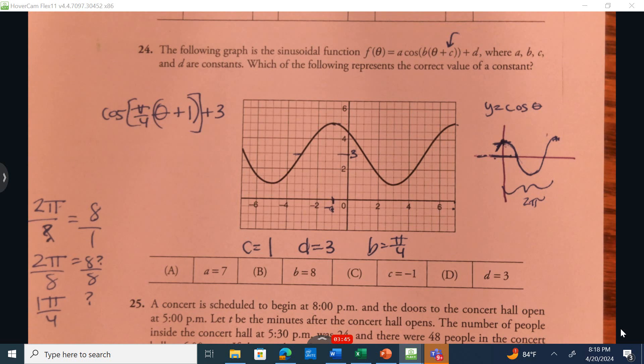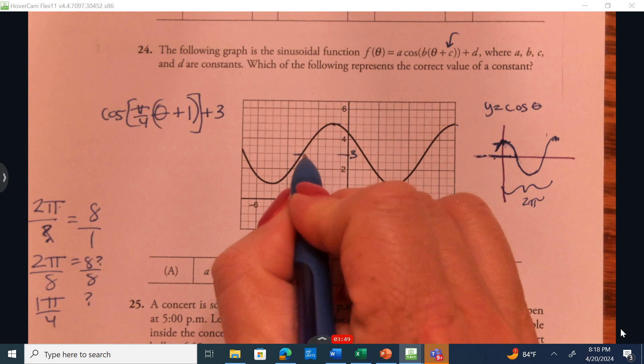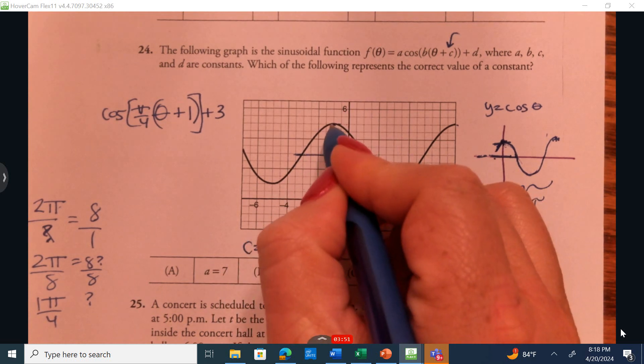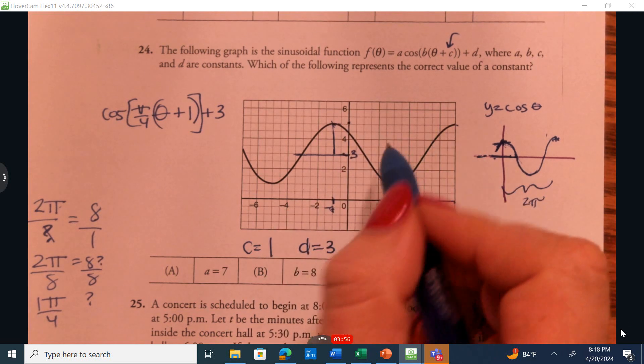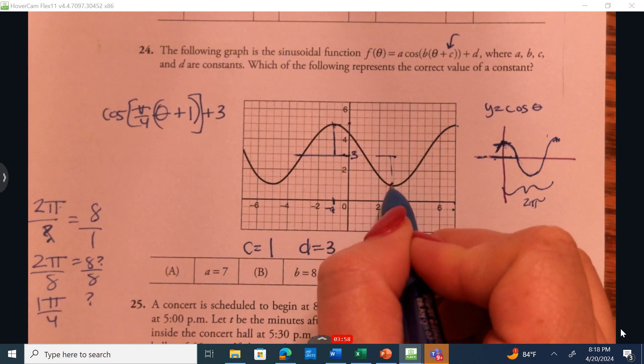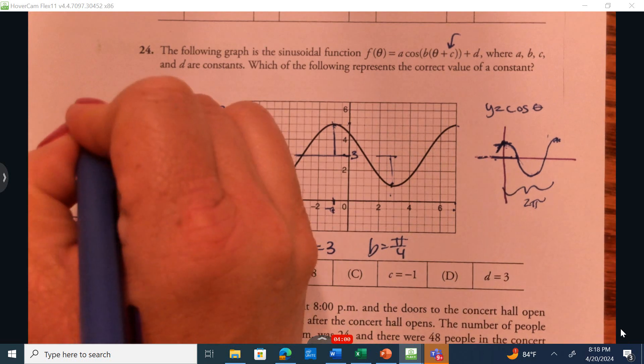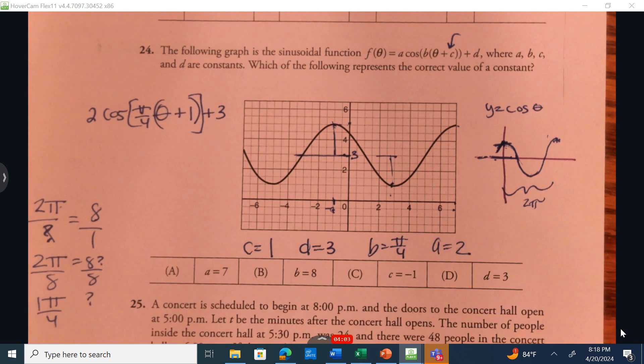All right, and then the very last thing we do is we determine the amplitude, and that is the distance from the midline up to the highest point, and that's the a value. So from 3 all the way to 5 is a distance of 2, or from 3 down to the lowest point of 1 is still a distance of 2. So in front is 2, and a equals 2.